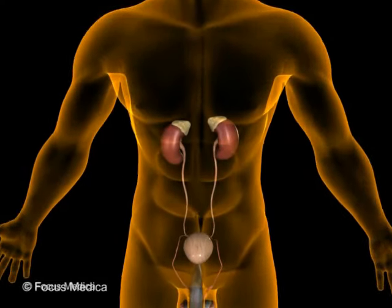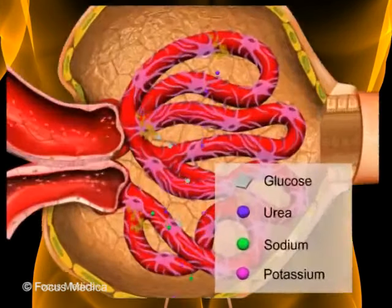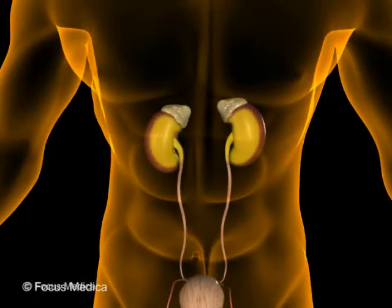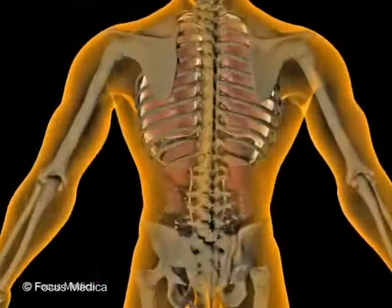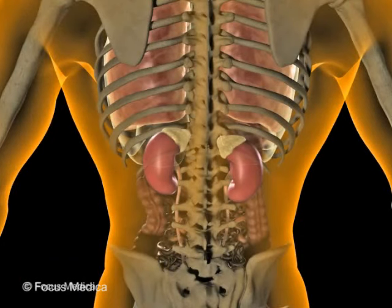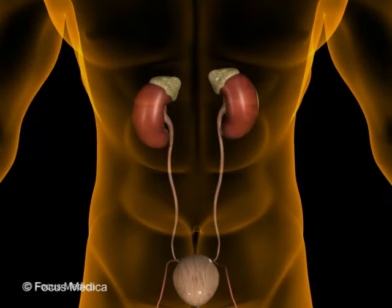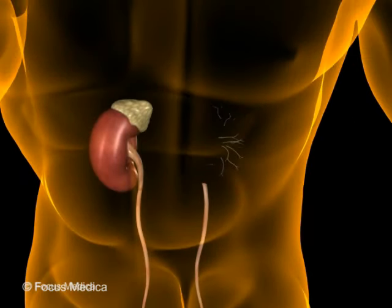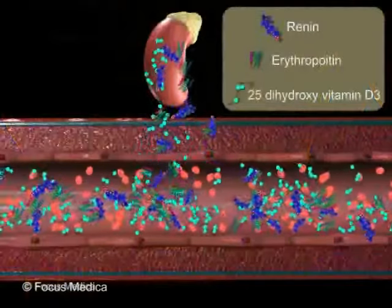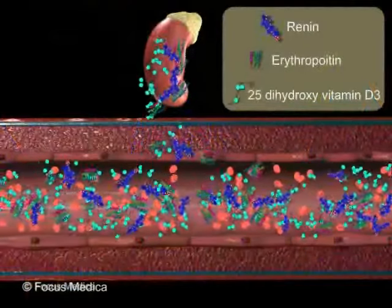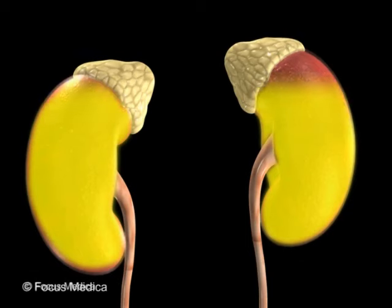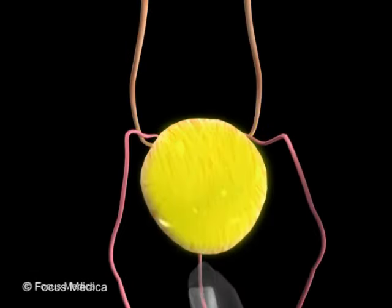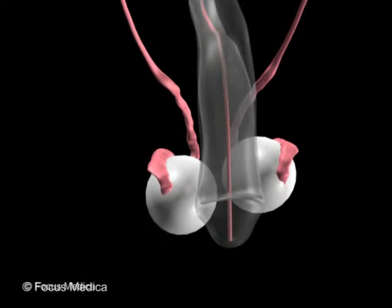The kidneys are important organs of the urinary system that help maintain water and electrolyte balance and remove waste material from the body. They are present as a pair, which is an advantage — even if one kidney is pathological, the person can survive with the other. In addition, the kidneys also perform some endocrine functions. The urine formed by the kidneys is carried by the ureters to the urinary bladder, from where it is voided through the urethra.